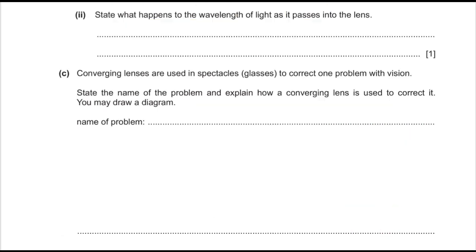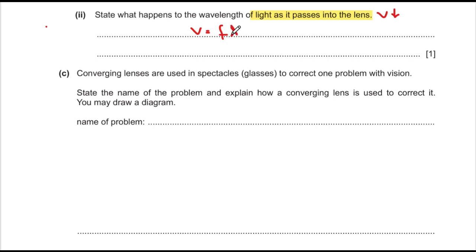Part two asks what happens to the wavelength of light as it enters the lens. Light has the greatest speed in air and least in solid. As light enters the glass its speed decreases. Using the wave equation v = fλ, frequency does not change when entering a medium, so wavelength is directly proportional to velocity — as velocity decreases, wavelength also decreases.